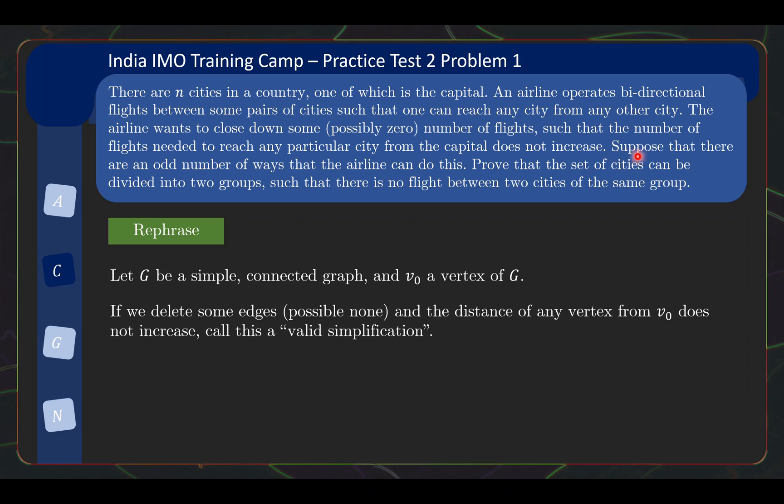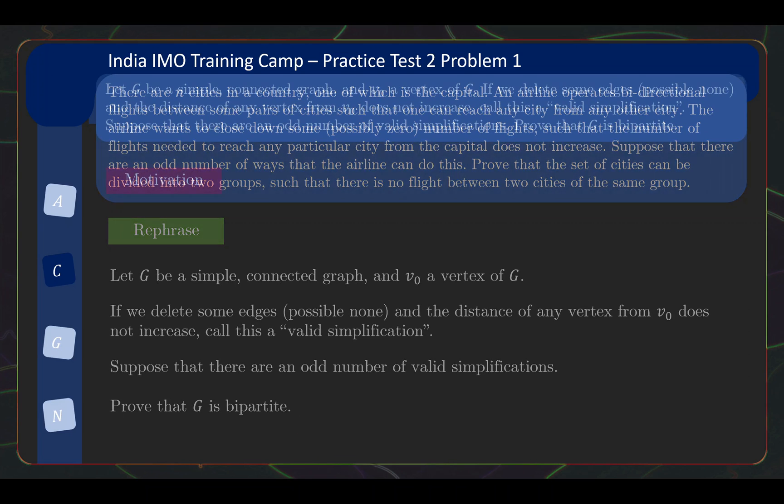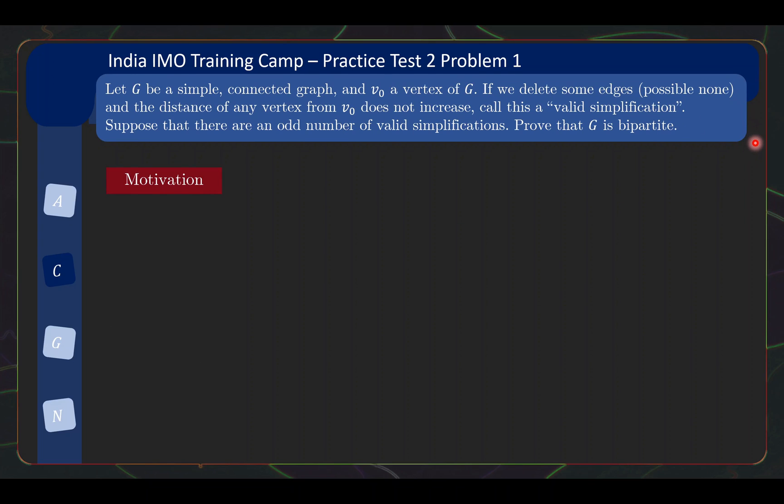And the question continues: suppose that there are an odd number of valid simplifications, prove that the set of cities can be divided into two groups such that there is no flight between two cities of the same group. Basically, this is saying that prove that G is bipartite. The definition of bipartite basically just means you can divide the vertices into two sets such that any edge must be connecting from one set to the other. You cannot be connecting vertices in the same set. So once we rephrase the problem, it is actually much shorter, so you can feel free to pause the video to digest this problem and maybe even give the problem a try yourself.